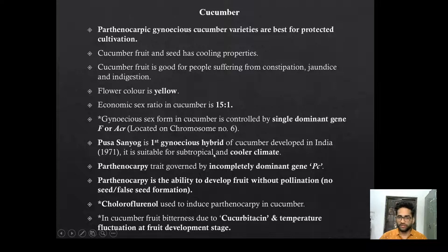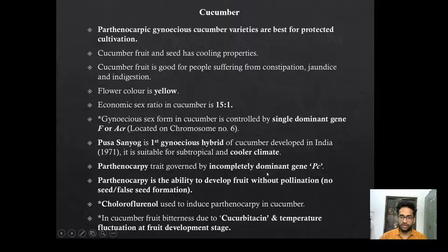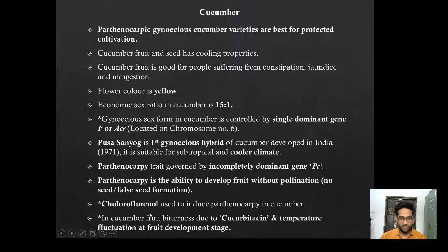Pusa Sayog is the first gynoecious hybrid of cucumber, suitable for subtropical and cooler climate. Parthenocarpic trait in cucumber is controlled by an incomplete dominant gene Pc. Parthenocarpy is the ability to develop fruit without pollination, meaning there will be no seed or false seed formation. Fluorofluoranol is used to induce parthenocarpy in cucumber.